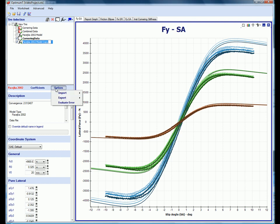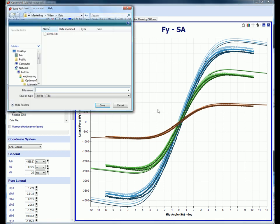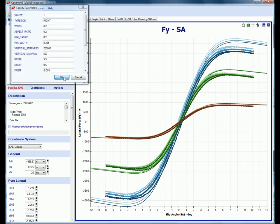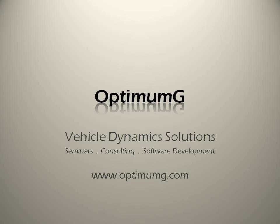Now that we've created a tire model, we can export it from Optimum T and use it in a simulation package. In this case, we'll export it as a TIR file. For more information about Optimum T, visit OptimumG.com.